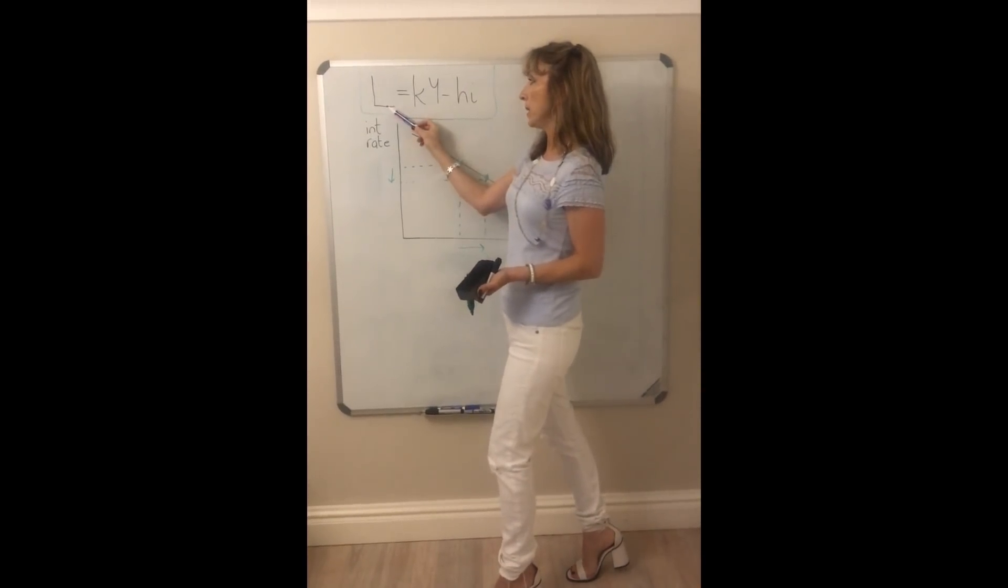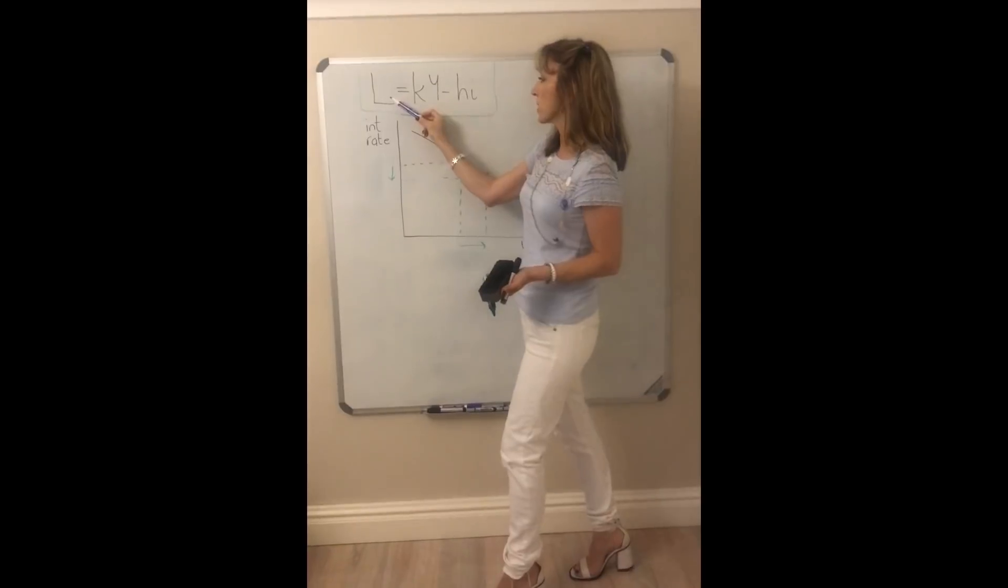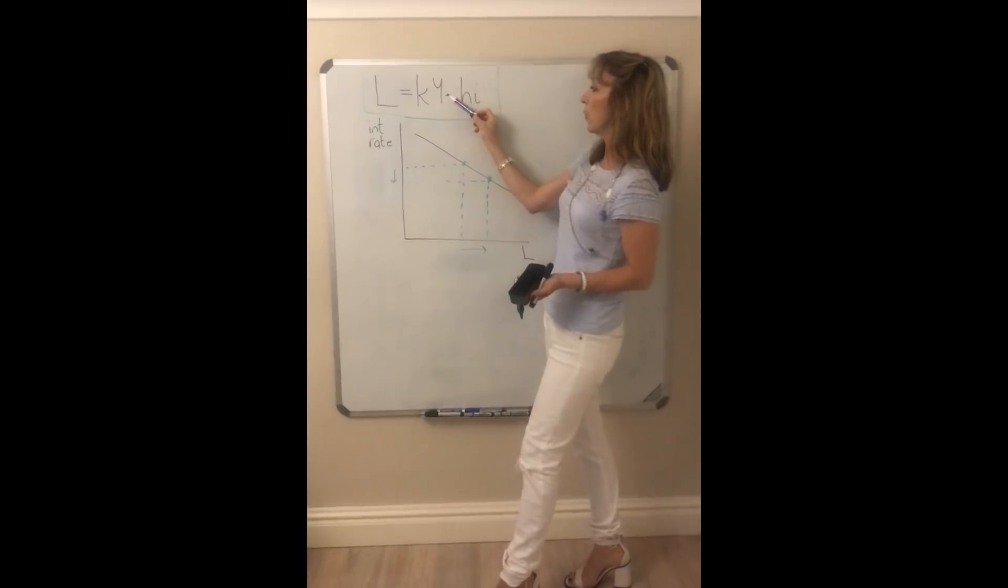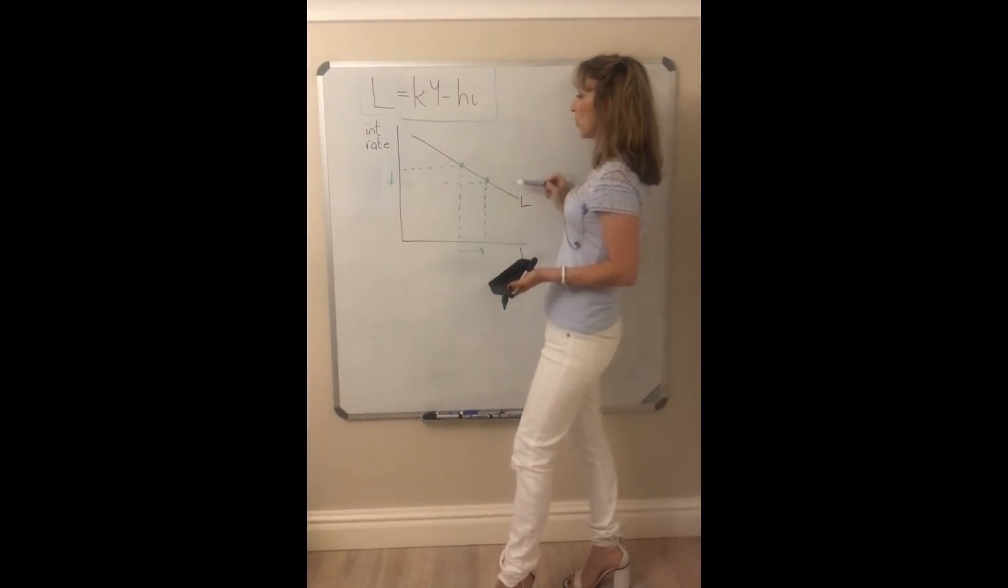When we put a money demand curve, this is what we're interested in. We're interested in the relationship between liquidity demand and the interest rate and we see it's negative. It's downward sloping.